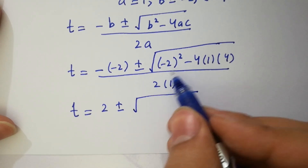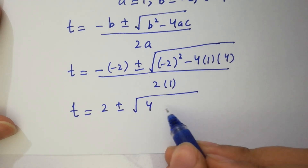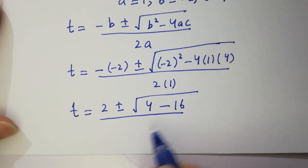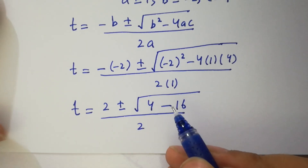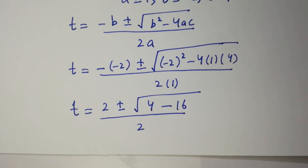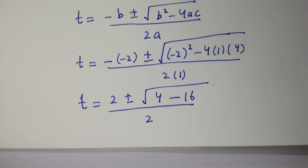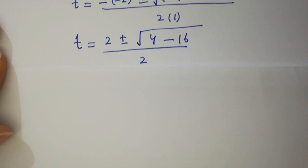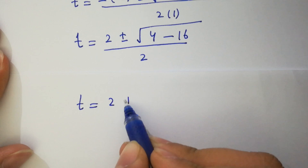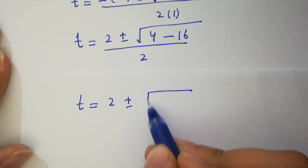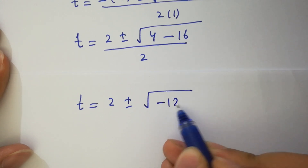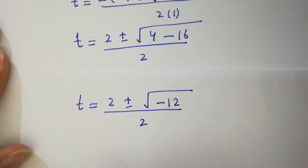minus 4 times 1 times 4, over 2 times 1. In the next step, t equals 2 plus or minus square root of 4 minus 16, which is minus 12, over 2.